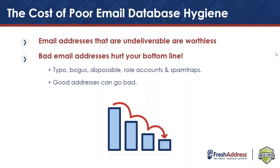Something as simple as a typo, bogus, disposable, or role accounts — or as dangerous as a spam trap — can be quite detrimental to your campaign. A lot of people don't think about how good addresses can go bad. Just because you practiced good hygiene during a data migration doesn't mean you're done. Up to 6% of good email addresses turn toxic each year, and just one of these could sink your entire program. It's really important to stay vigilant in constantly scanning your list and being alert for when deliverability threats come up.